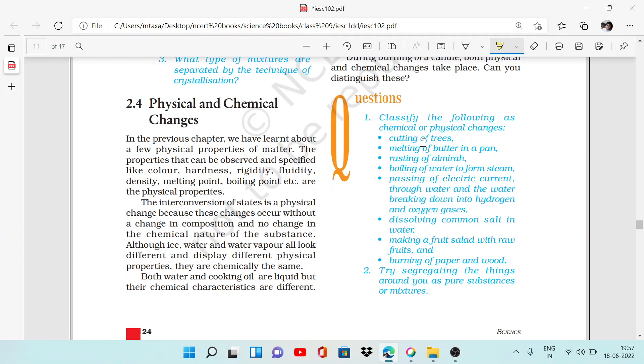Let's see some questions from this section. Classify the following as chemical and physical changes. For cutting of trees, there are both changes. Physical changes because appearance changes. When you cut the tree from the stem, appearance changes like green leaves and dry leaves.